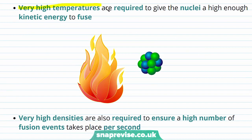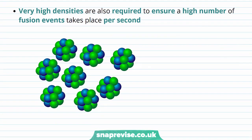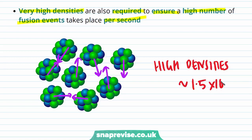This means that very high temperatures are required to give the nuclei high enough kinetic energy to fuse — approximately 1.4×10⁷ Kelvin. Very high densities are also required to ensure a high number of fusion events takes place per second, approximately 1.5×10⁵ kilograms per metre cubed.